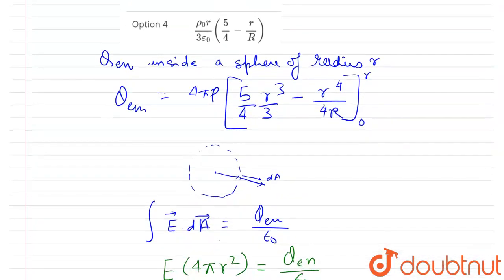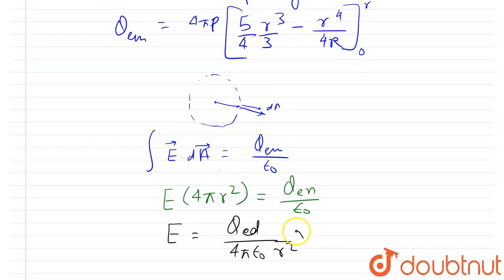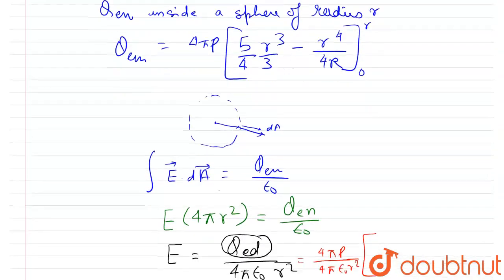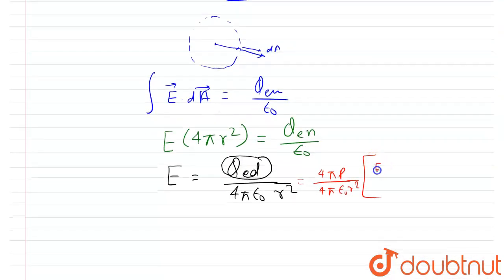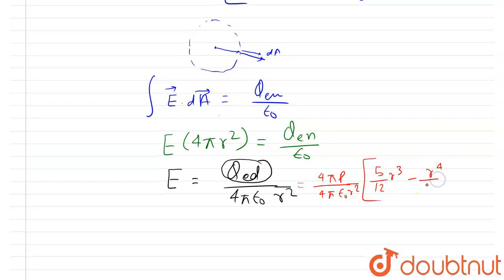Substituting Q_enclosed = 4πρ₀[5r³/12 − r⁴/(4R)] into E = Q_enclosed / (4πε₀r²), the 4π cancels, giving E = ρ₀ / (ε₀r²) × [5r³/12 − r⁴/(4R)]. This is the expression for the electric field at distance r from the center.